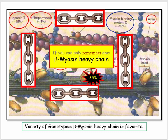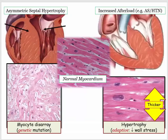Before leaving this discussion, if you can remember one of the missense mutations, make sure it's the mutated beta-myosin heavy chain. Here is the summary slide of the genetic disorder of hypertrophic cardiomyopathy versus the adaptive pathology of concentric hypertrophy.